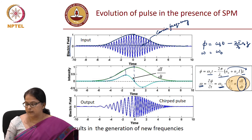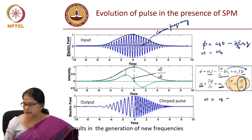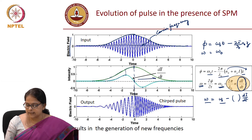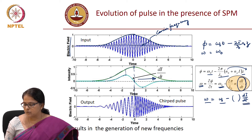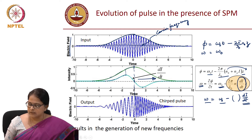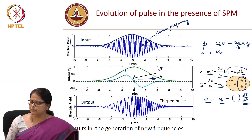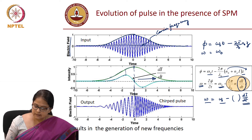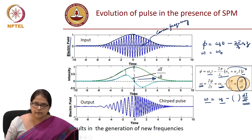On the right side of the pulse, dI/dt is negative, so ω effectively increases — giving a higher frequency. On the left side (t < 0), dI/dt is positive, so the instantaneous frequency is reduced: ω = ω₀ minus a positive quantity. This is why the carrier looks like it has a reduced frequency on the left and an increased frequency on the right.